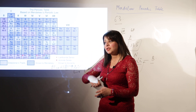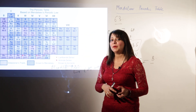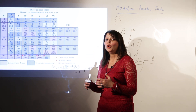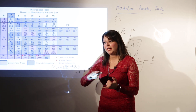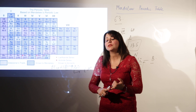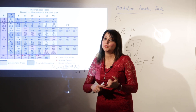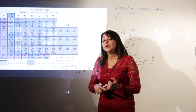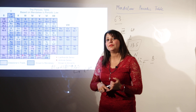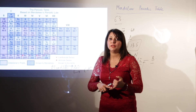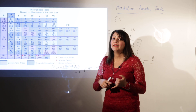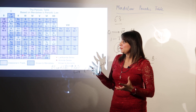Mendeleev was confident in his arrangement of elements and their periodic relationships. His three major contributions were: first, making systematic study possible by classifying 63 elements properly; second, boldly predicting the existence of undiscovered elements by leaving vacant spaces; and third, correcting the atomic masses of several elements — all great achievements in the history of chemistry.